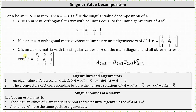We will look at an example where matrix A is a two by three matrix. Let's check the dimensions of U, V, V transpose, and sigma. If A is a two by three matrix, M is two and N is three, so U is a two by two matrix. Sigma is a two by three matrix. V and V transpose are both three by three matrices.